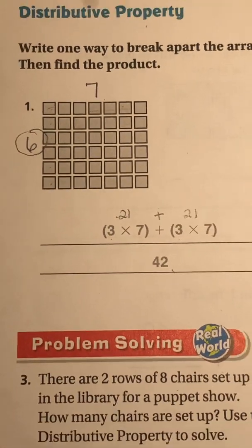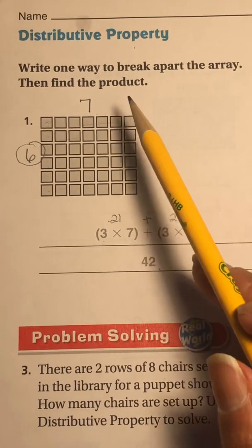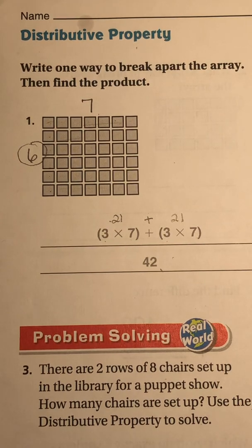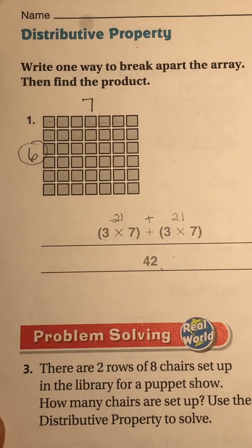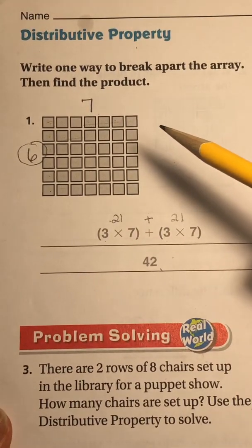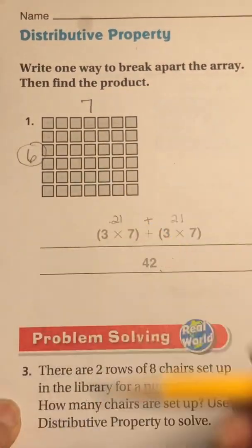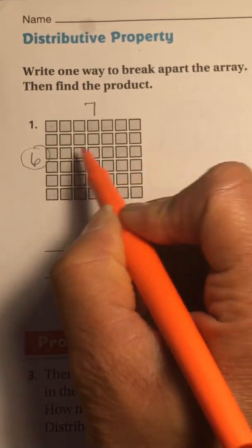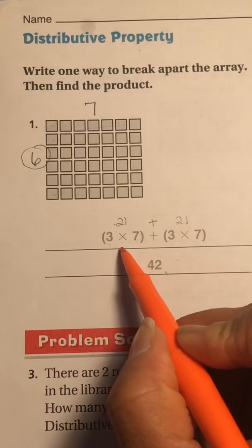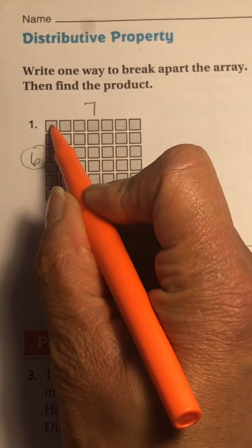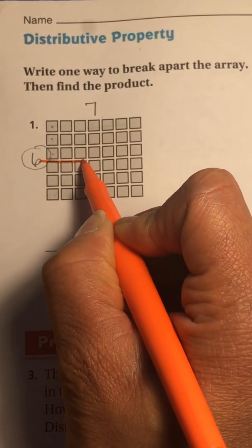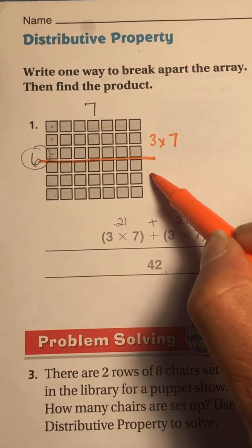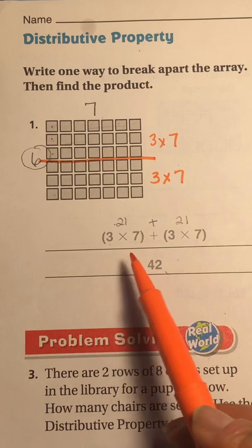The other thing they didn't do is draw a line through the array to show two smaller arrays. I'm going to use a different color marker to break it apart. If this is six rows of seven, I'm going to count down three rows and break apart my array right there. So now the top array is three times seven and the bottom array is also three times seven. That's where they got it from.